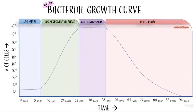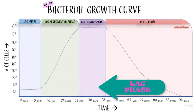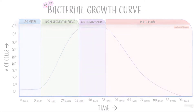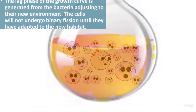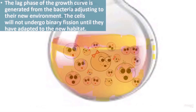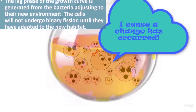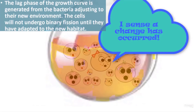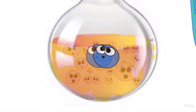The lag phase of the growth curve occurs when we have no active growth, so the population of cells remains the same or constant during the lag phase. This is because the bacteria are adjusting to the new environment and thus will not undergo binary fission until they have adapted to their new habitat.